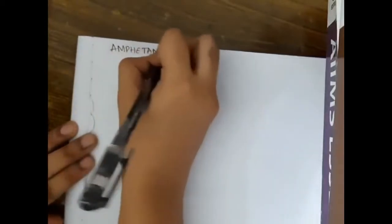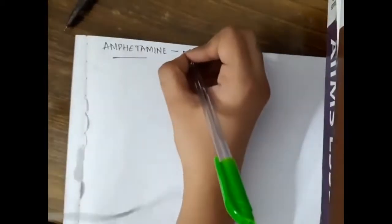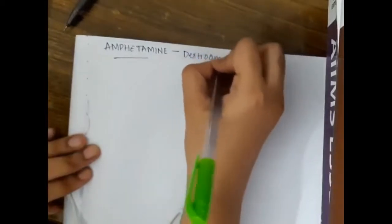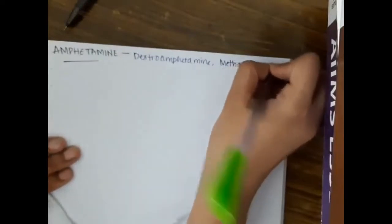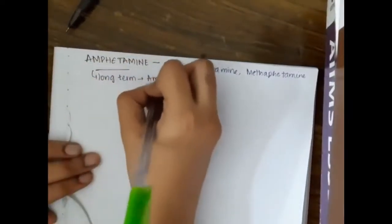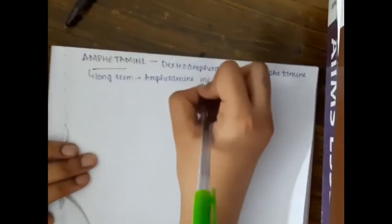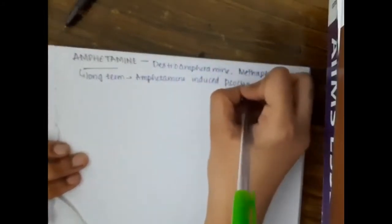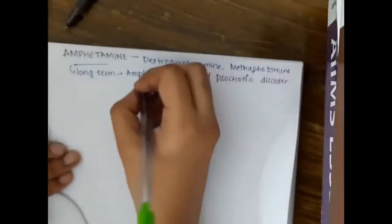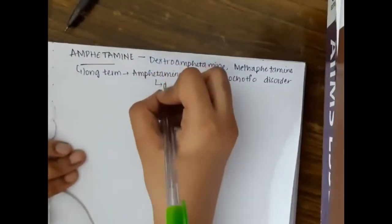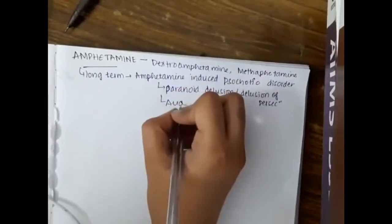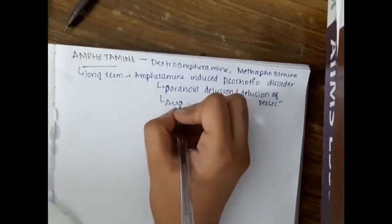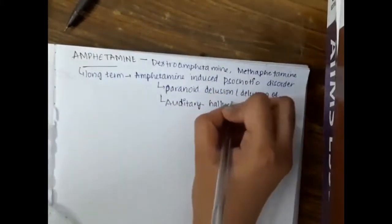The next important drug is amphetamine. Amphetamine has dexamphetamine and methamphetamine. Amphetamine on long term can cause amphetamine induced psychotic disorder. This mainly comprises paranoid delusion or delusion of persecution and auditory hallucinations.